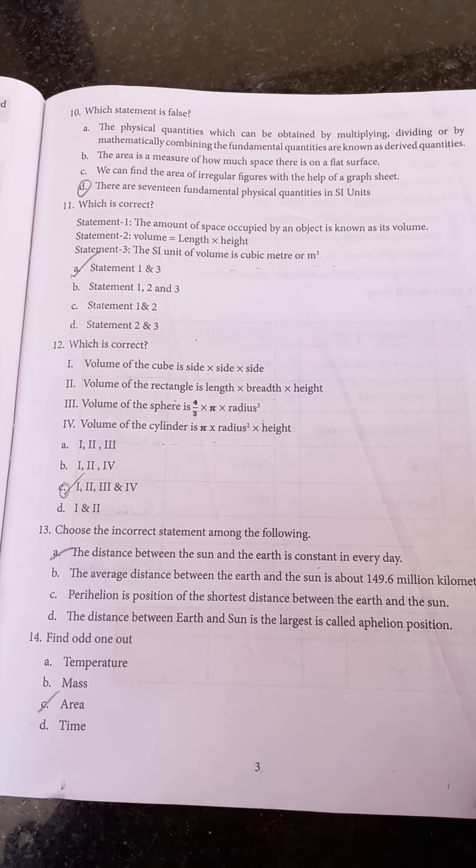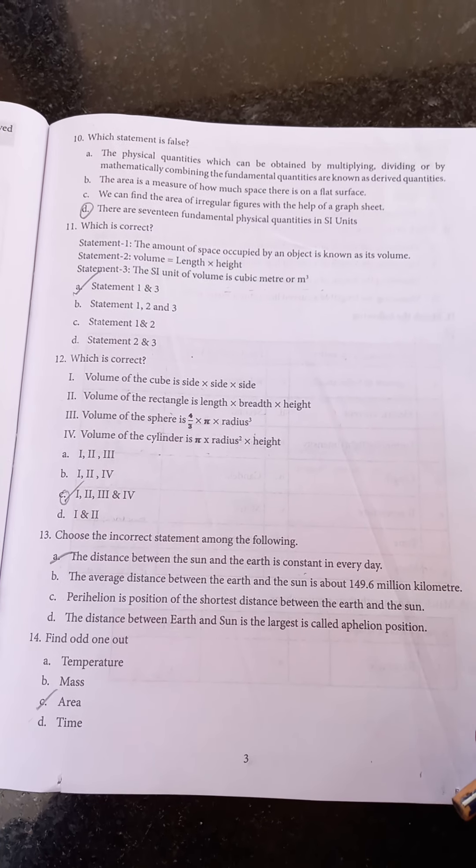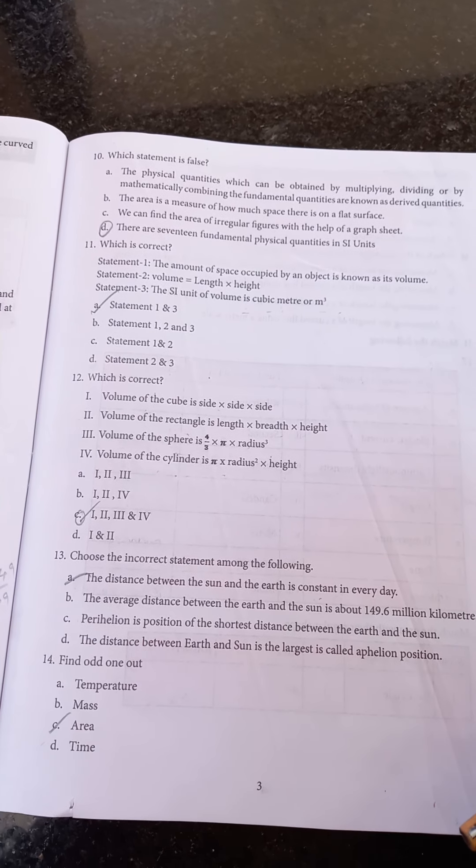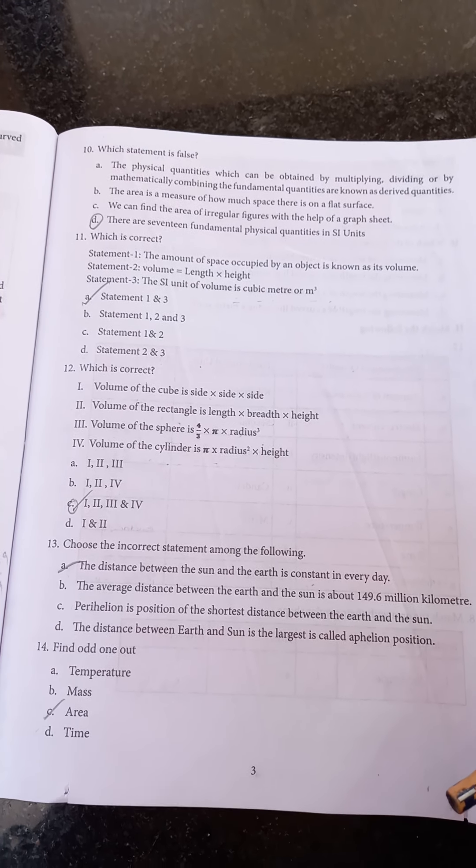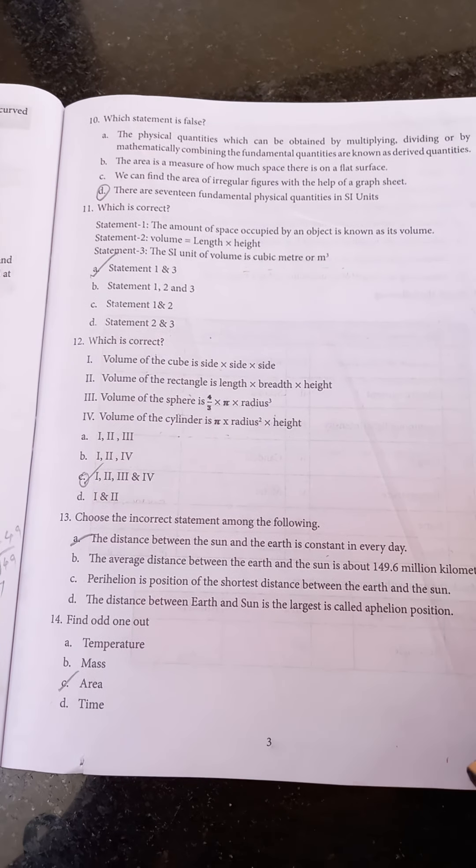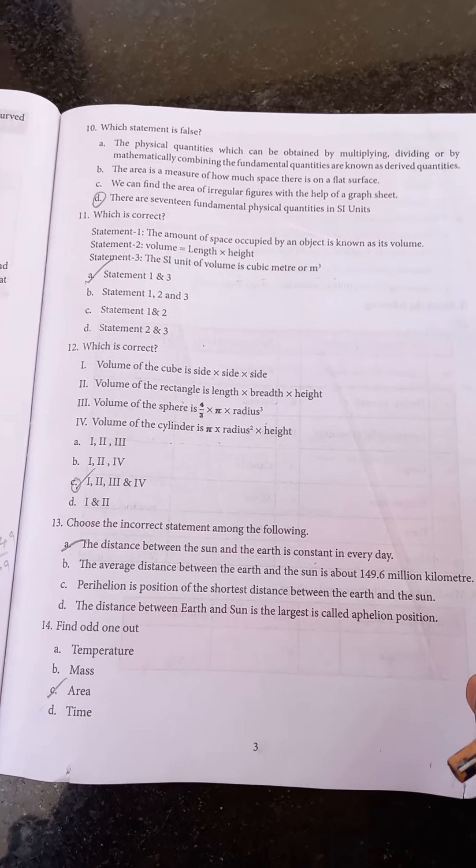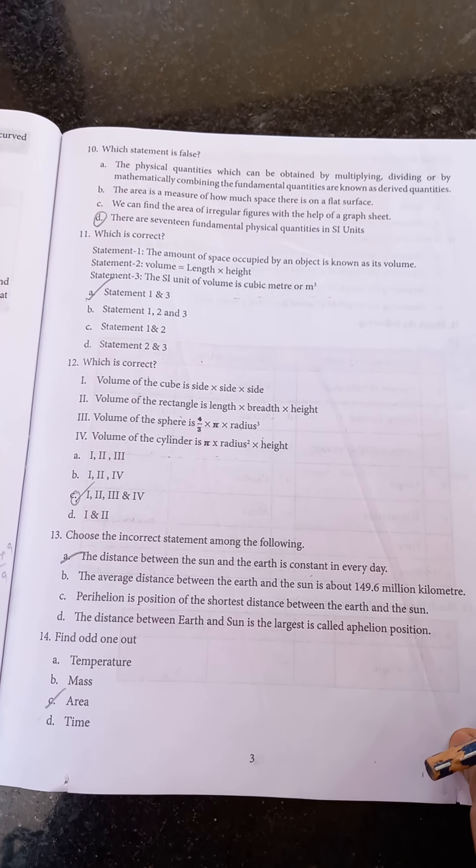Next question: choose the incorrect statement among the following. The incorrect statement is option A: the distance between the sun and the earth is constant every day. Find odd one out. The odd word is area.